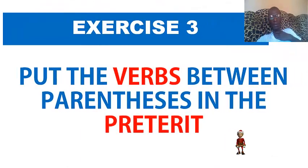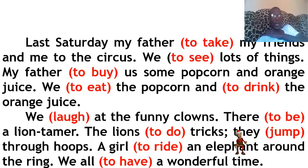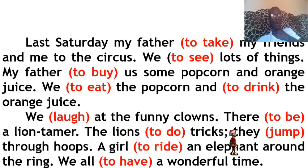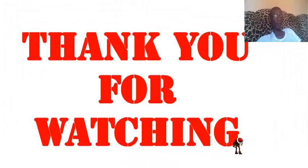Exercise final: Put the verbs in parentheses in the preterite. Last Saturday, my father (take) my friends and me to the circus. We (see) lots of things. My father (buy) us some popcorn and orange juice. We (eat) the popcorn and (drink) the orange juice. We (laugh) at the funny clowns. There (be) a lion tamer. The lions (do) tricks. They (jump) through hoops. A girl (ride) an elephant around the ring. We all (have) a wonderful time. Envoyez la réponse à votre professeur. This is the end of the lesson — thank you for watching, and stay at home, bye bye!